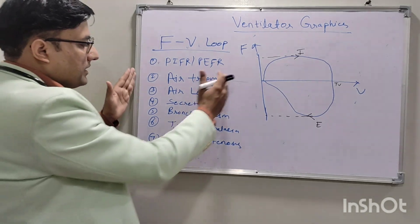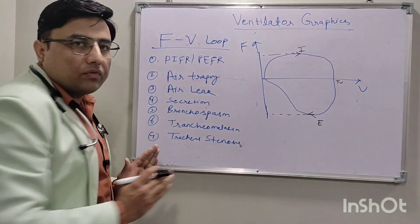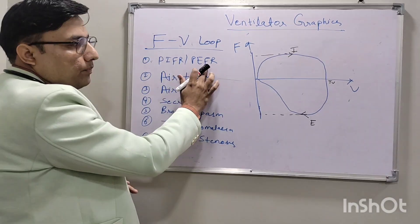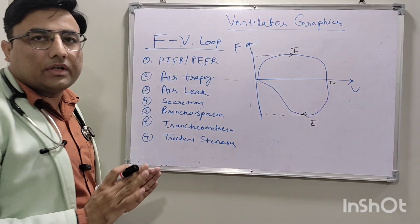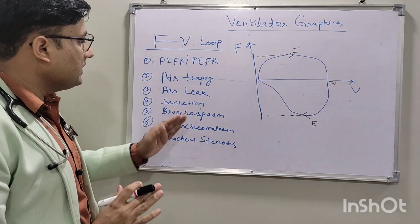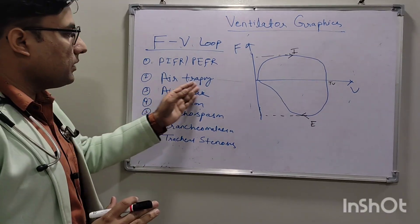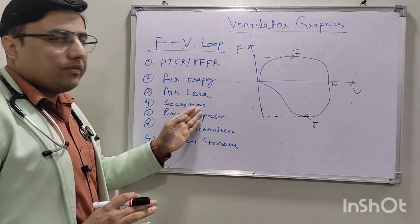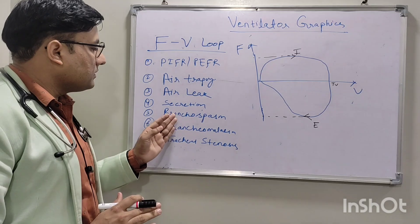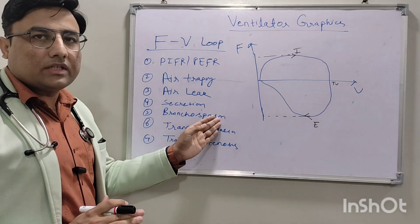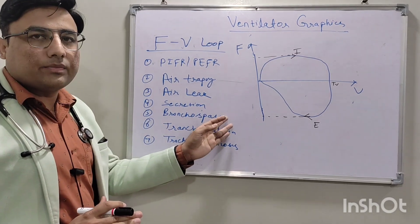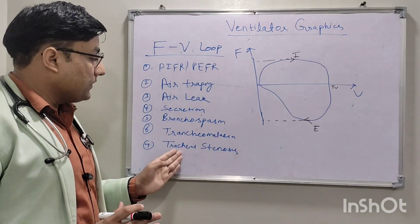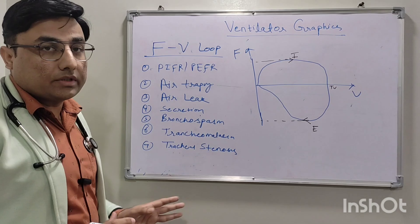The things we can see in the flow volume loop include: peak inspiratory flow rate or peak expiratory flow rate, air trapping, air leak, airway secretions, bronchospasm or increased expiratory resistance, and tracheomalacia or tracheal stenosis.